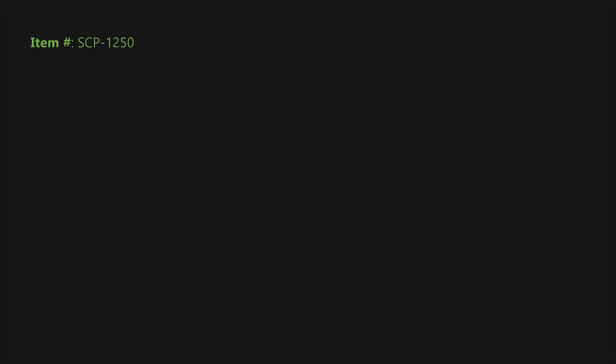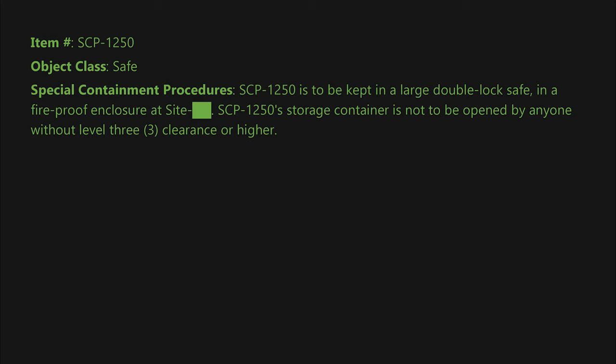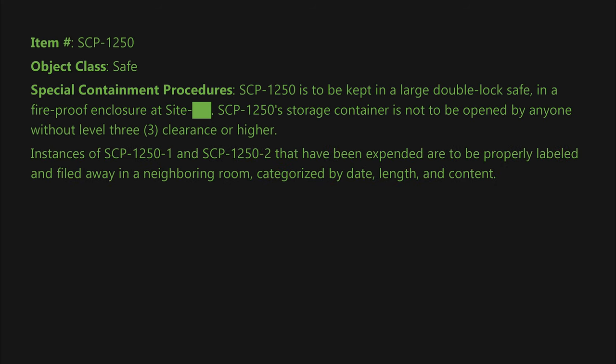Item number SCP-1250. Object class: Safe. Special containment procedures: SCP-1250 is to be kept in a large double lock safe in a fireproof enclosure at Site [REDACTED]. SCP-1250's storage container is not to be opened by anyone without Level 3 clearance or higher. Instances of SCP-1250-1 and SCP-1250-2 that have been expended are to be properly labeled and filed away in a neighboring room, categorized by date, length, and content.